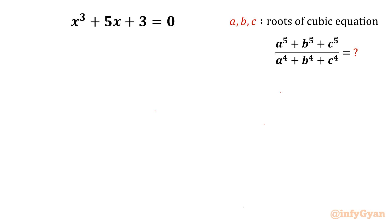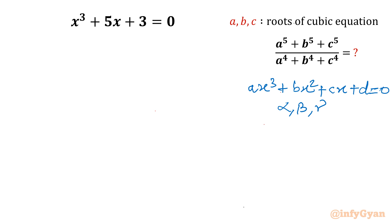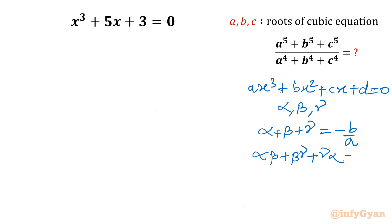Let us get started by writing Vieta's method. If the equation is ax³ + bx² + cx + d = 0 and roots are alpha, beta, and gamma, then using Vieta's method we know that the sum of roots equals minus the coefficient of x² over the leading coefficient, so it is -b/a. The sum of roots taken two at a time, alpha·beta + beta·gamma + gamma·alpha, is c/a. The product of roots is -d/a, the constant coefficient over the leading coefficient with a minus sign.